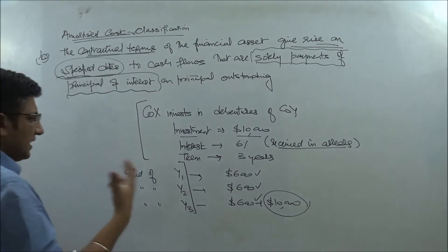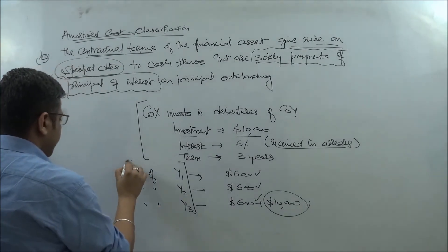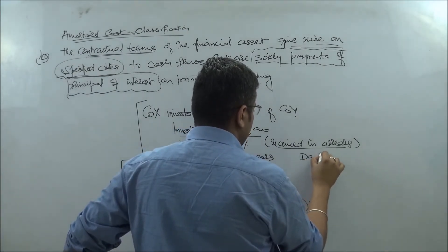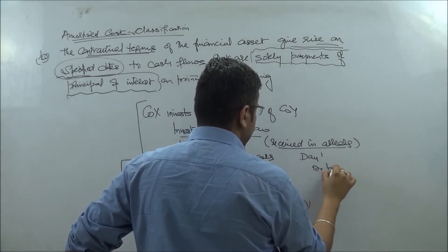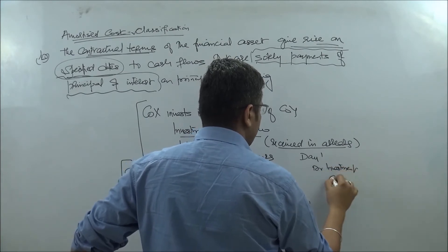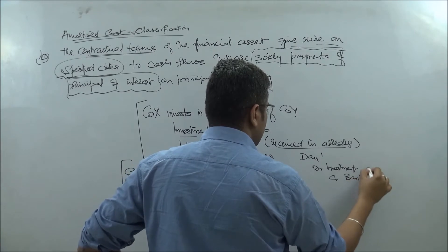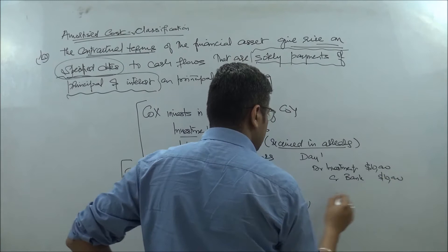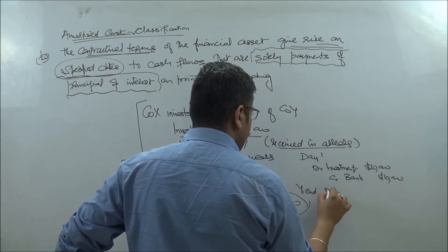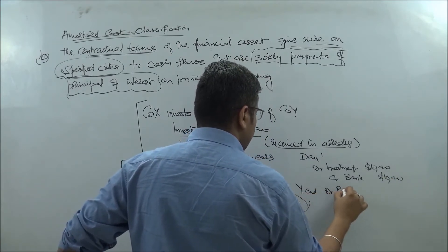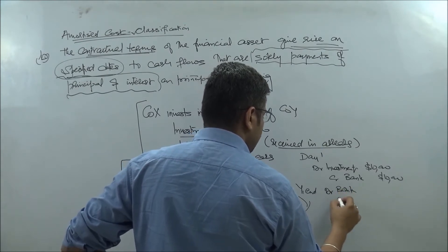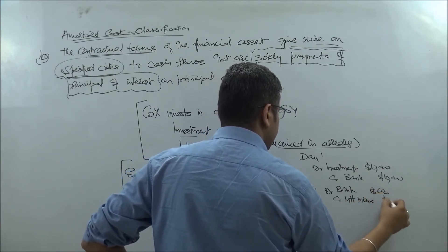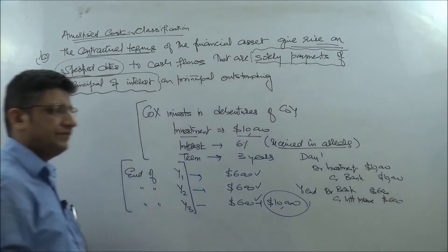Looking at the accounting, on day one we debit Investment and credit Bank for $10,000. At year one end, we debit Bank and credit Interest Income for $600, since we have received the interest.